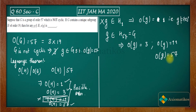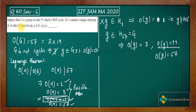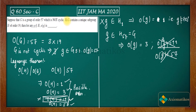Since G has a unique subgroup of order 19, any element of order 19 would belong to H — but g is not in H, so order 19 is not possible for g. Can the order of g be 57? No, because G is not cyclic, so no element can have order 57. Therefore, from this case, the order of g must be 3.